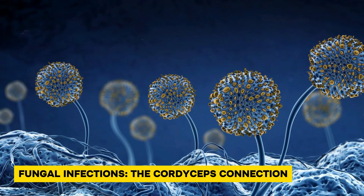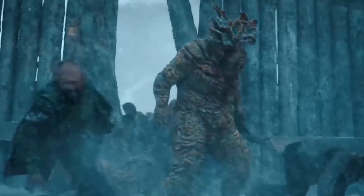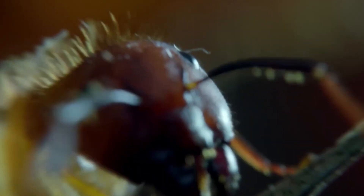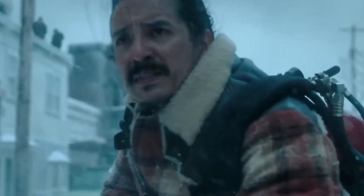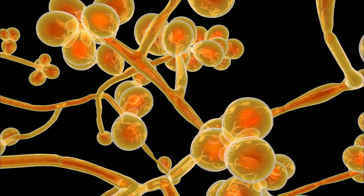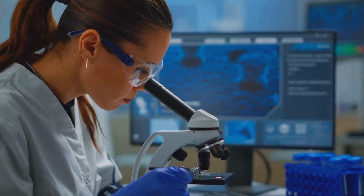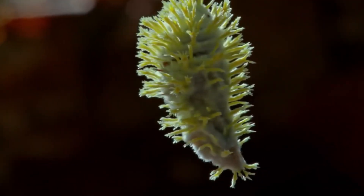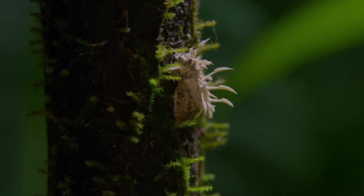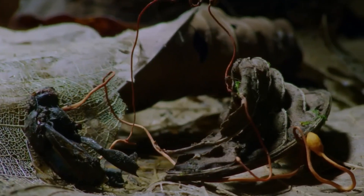Fungal infections: the cordyceps connection. Fictional zombies, such as those in The Last of Us, are often inspired by real-world fungi like Ophiocordyceps unilateralis, which infects ants and manipulates their behavior. The fungus compels ants to climb to elevated positions, where they die, allowing the fungus to release spores. While no human-infecting fungus currently mimics this level of control, fungal pathogens like Candida auris demonstrate resilience and increasing resistance to treatments. A zombie-like fungal infection would require a pathogen capable of rapidly invading the human nervous system, altering behavior, and spreading efficiently. Current fungal infections lack the speed and behavioral impact needed, but their adaptability raises concerns about future evolution.